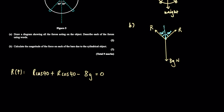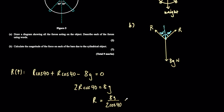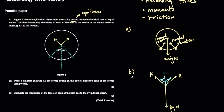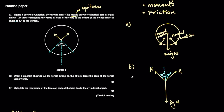Solving for R: we have 2R cosine 40 equals 8g, therefore R equals 8g divided by 2 cosine 40. If you put that into a calculator you get approximately 51.17 newtons. So that is an example of a modeling with statics question where we can effectively model it as a static particle.